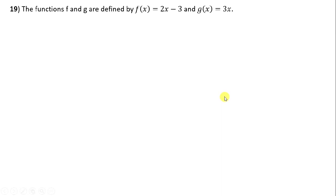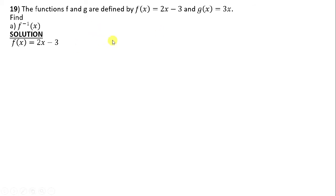Question 19: The functions f and g are defined by f(x) = 2x − 3 and g(x) = 3x. Find f inverse of x. When looking at functions, we have the domain and the range. For an inverse, we make the range into the domain. So we replace f(x) with y, giving y = 2x − 3, then make x the subject.